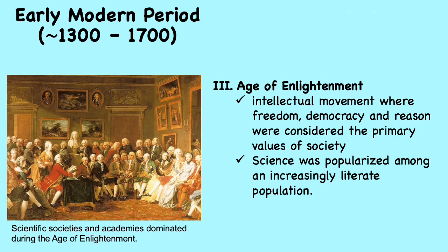The Age of Enlightenment was the intellectual movement that developed mainly in France, Britain, and Germany, where freedom, democracy, and reason were considered the primary values of society, and science played a leading role in Enlightenment discourse and thought. Many Enlightenment writers and thinkers associated scientific advancement with the overthrow of religion and traditional authority in favor of the development of free speech and thought. Enlightenment science also greatly valued empiricism, which believes that knowledge comes only or primarily from sensory experience. Science during the Enlightenment was dominated by scientific societies and academies, which were considered the center of scientific research and development.